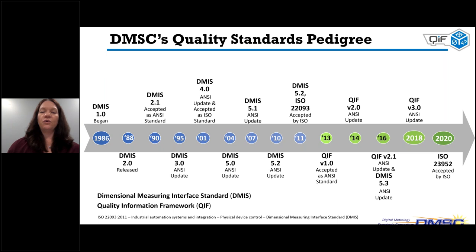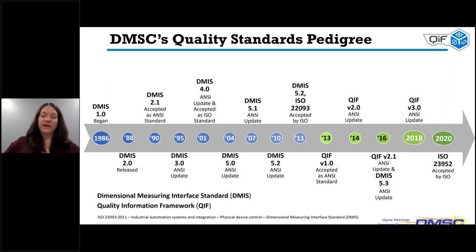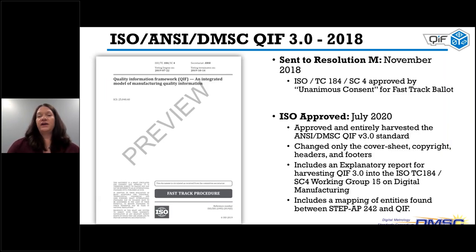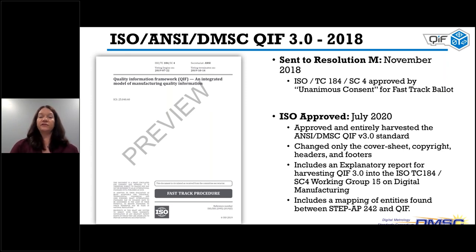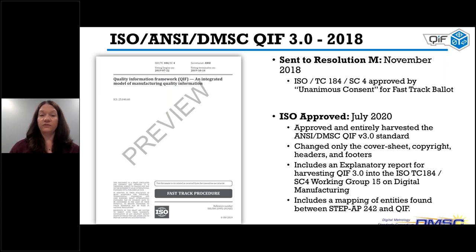In 2011 we started to see 3D digital CAD models and model-based definition on the rise, and the DMSC wanted to evolve to keep up with the times — and QIF was born. QIF is the Quality Information Framework, and just like DEMIS, it has also evolved since 2011. We now have QIF 3.0, which has been officially adopted by ISO. It took a few years for the ISO review process, but through hard work and dedication, in July of 2020 — right in the middle of the pandemic — ISO approved and harvested QIF 3.0 into TC 184 SC4 working group 15, which focuses on digital manufacturing. This was a big deal. One of the ISO requests was to understand the mapping between STEP 242 and QIF, and that work is underway.